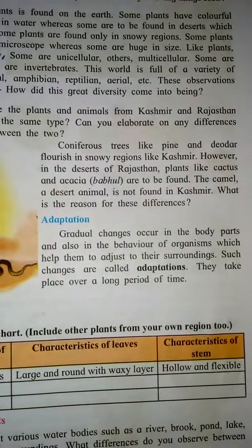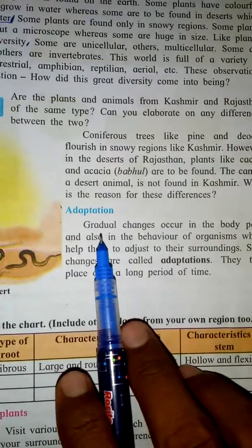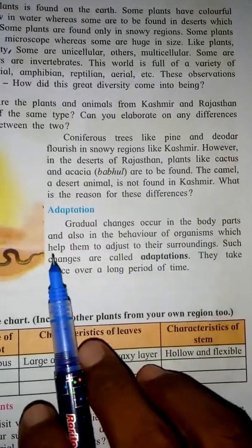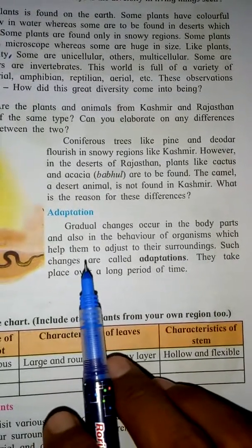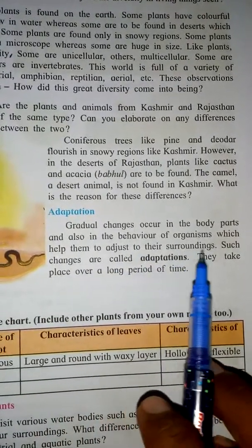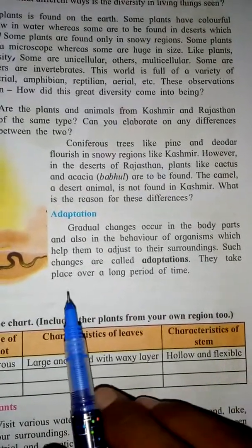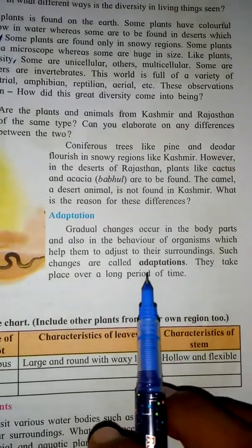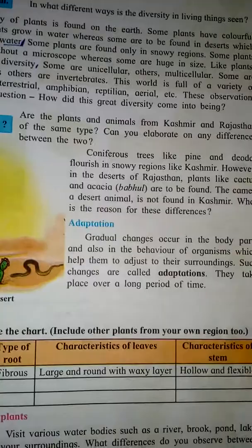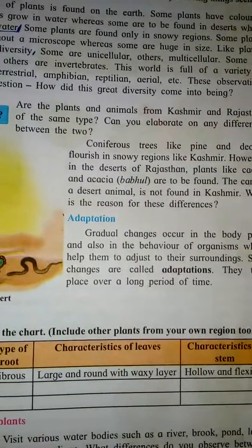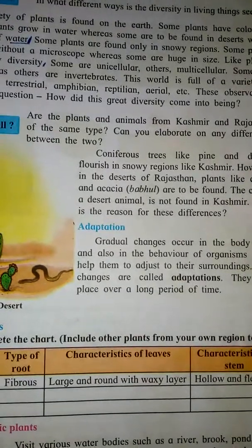This is called adaptation — the changes that occur in the body parts and also in the behaviors of organisms that help them to adjust to their surroundings. Such changes are called adaptations. They take place over a long period of time. To survive in a particular environment, changes occur in the body and living methods of organisms — this is called adaptation.